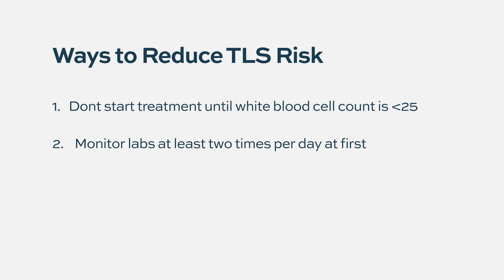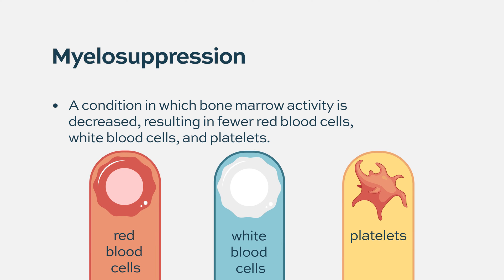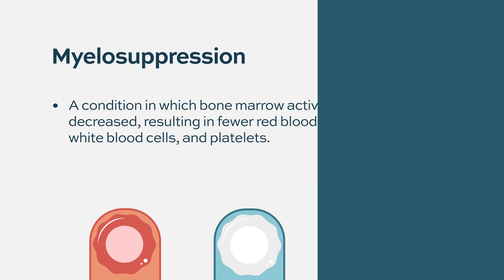The second, more common side effect — something we're trying to educate all physicians across the U.S. about — is what we call myelosuppression. Patients develop low counts for a long time, especially when the drug is used uninterrupted. The label says to use it 28 days a month, but many physicians just keep going with this oral medication continuously, like they would with some other medications. The counts then take a very long time to recover and patients usually develop infections. This is an on-target side effect because normal myeloid cells also depend on BCL-2.